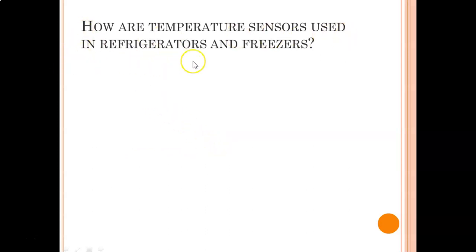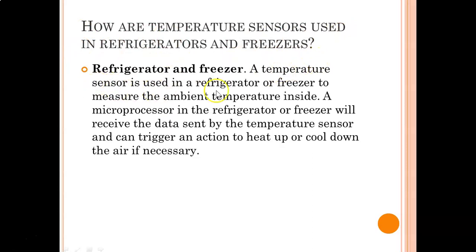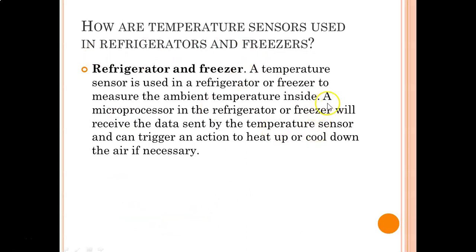How are temperature sensors used in refrigerators and freezers? Temperature sensors are used in a refrigerator or freezer to measure the ambient temperature inside. A microprocessor will receive the data sent by the temperature sensor and trigger an action to heat up or cool down the air if necessary. Always keep in mind that sensors send information to the microprocessor, and the microprocessor uses an actuator to change the environment.